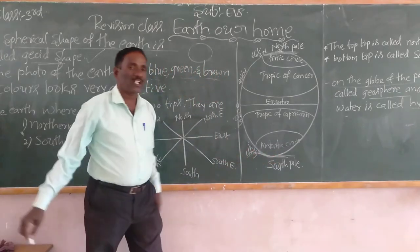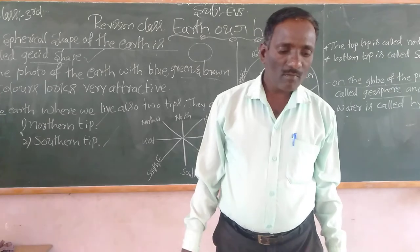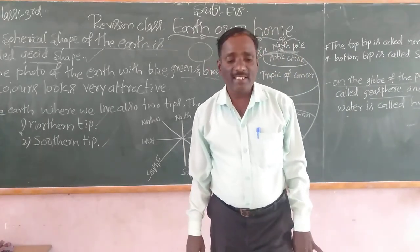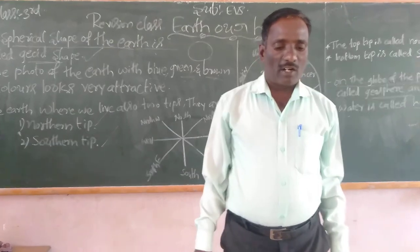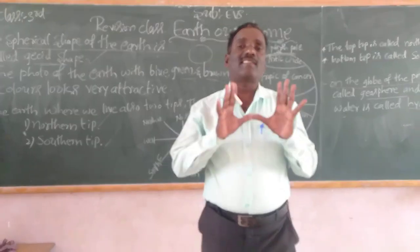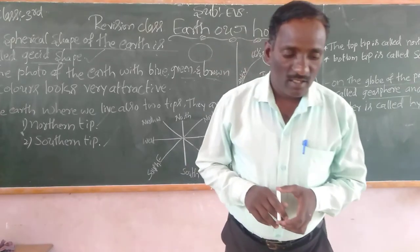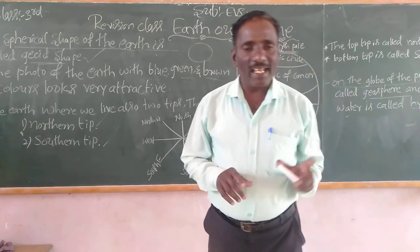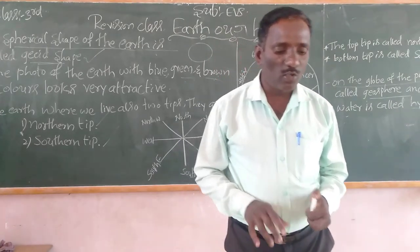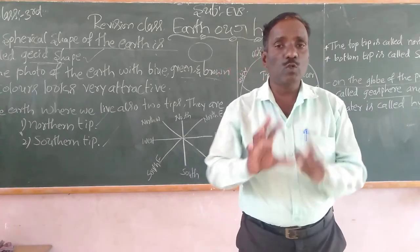Observe the horizontal and vertical lines on the globe. These are only imaginary lines drawn on the globe — they are not seen really on the earth. They are drawn to know the time, place, and distance between two places.